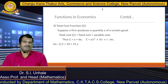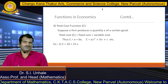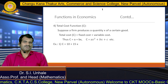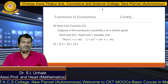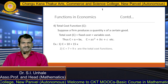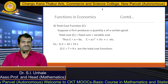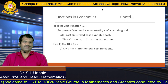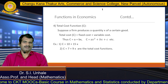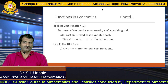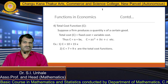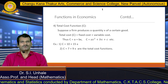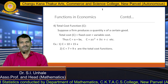Let us see one example: total cost function C equals 10 plus 15x, where 10 and 15 are the constants. Here, 10 is the fixed cost and 15x is the variable cost. Another example: suppose C equals 7 plus 9x, where 7 and 9 are constants, so 7 is the fixed cost and 9x is the variable cost for this cost function. So the fourth function from economics is the total cost function, defined as total cost equals fixed cost plus variable cost.